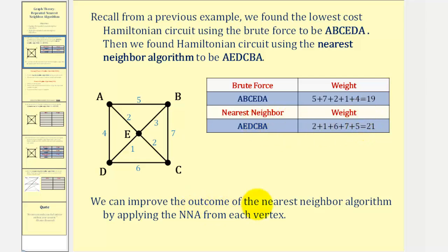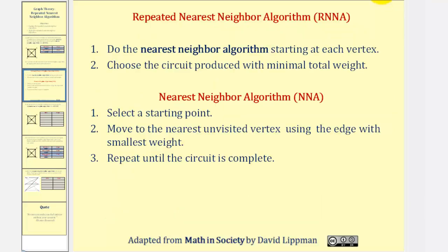We can improve on the Nearest Neighbor Algorithm by applying the algorithm from each vertex — this is the repeated Nearest Neighbor Algorithm. Step one: perform the Nearest Neighbor Algorithm starting at each vertex. Step two: choose the circuit produced with the minimal total weight. To apply the Nearest Neighbor Algorithm: start at a vertex, move to the nearest unvisited vertex using the edge with the smallest weight, and repeat until the circuit is complete.